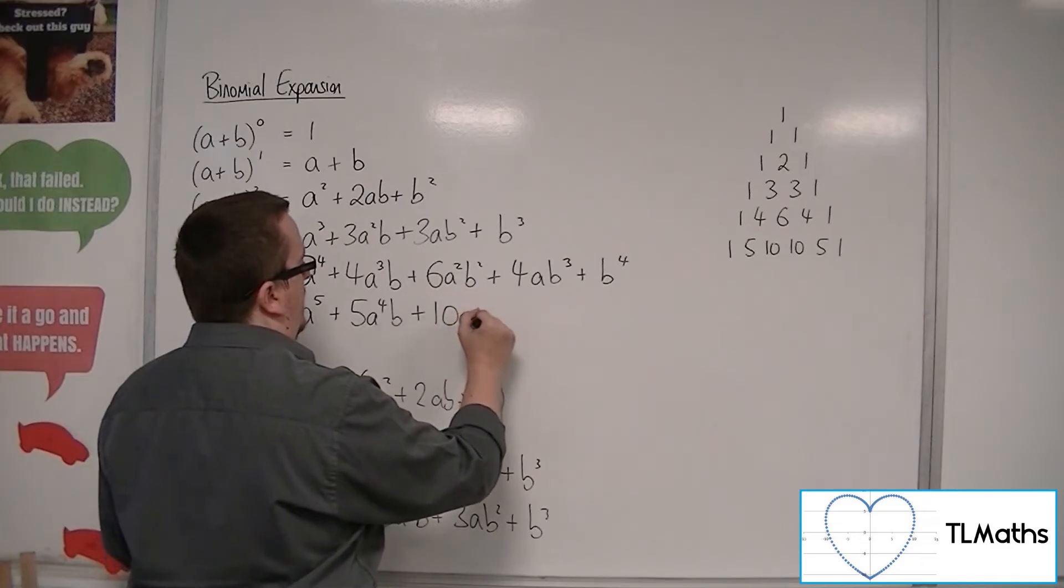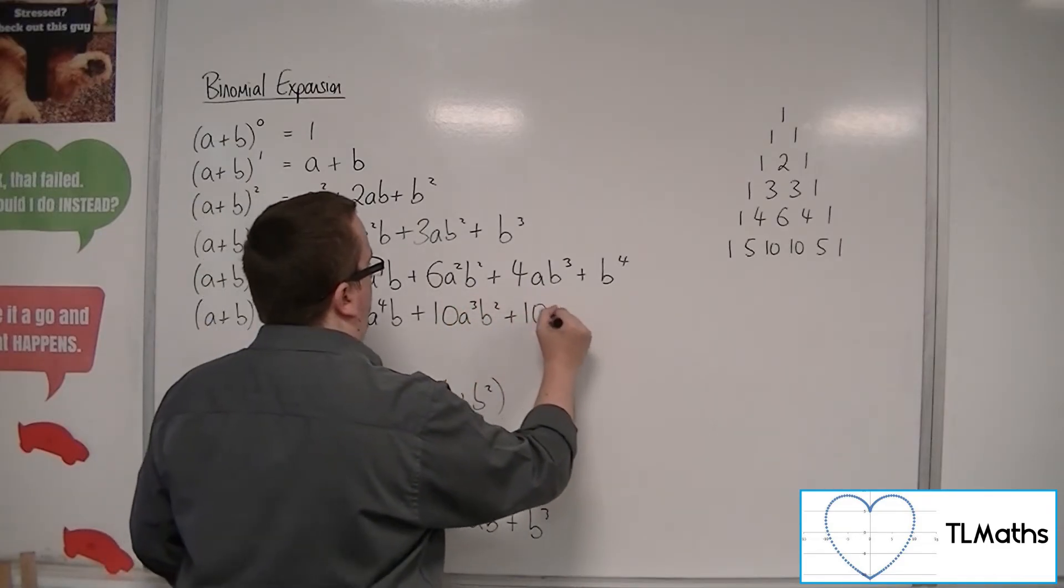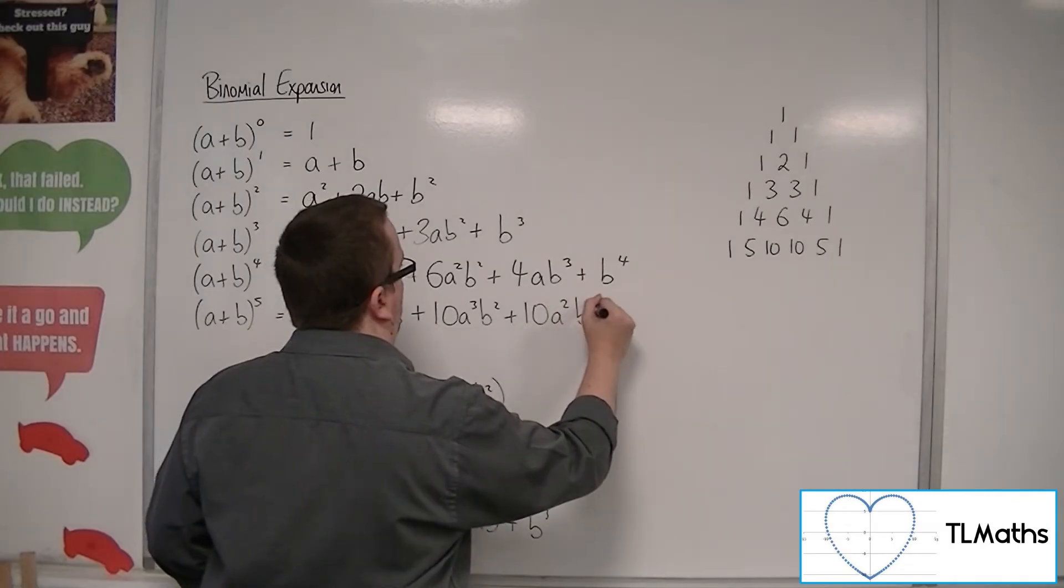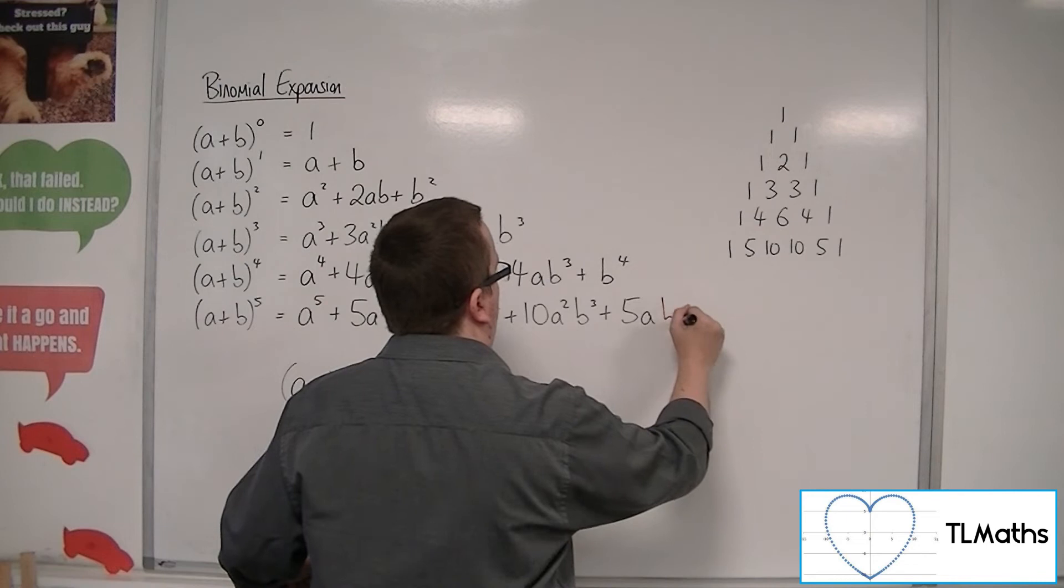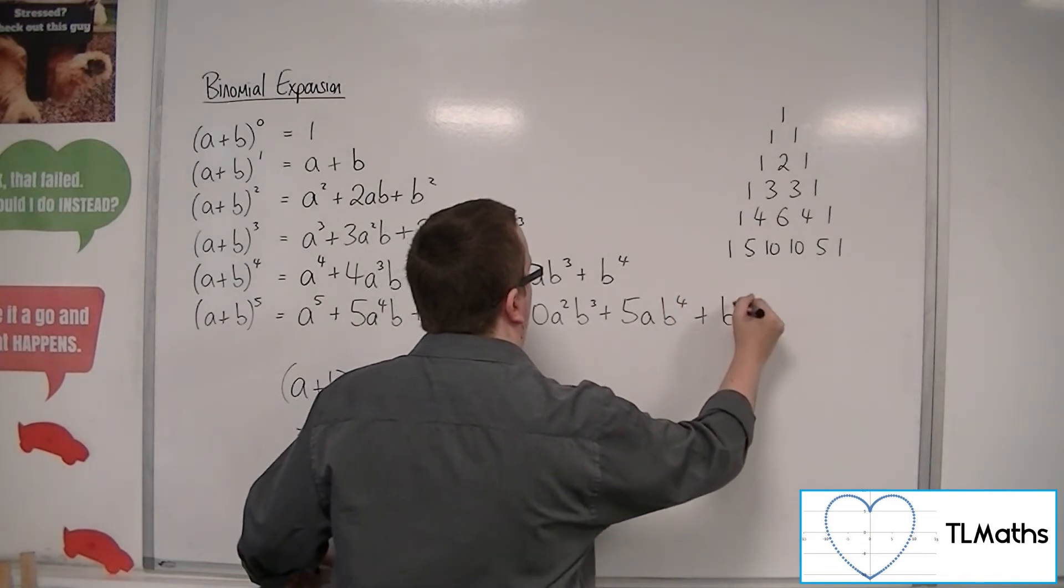Then 10 A cubed B squared plus 10 A squared B cubed plus 5 A B to the 4 plus finally B to the 5.